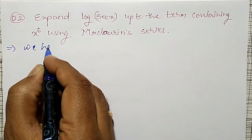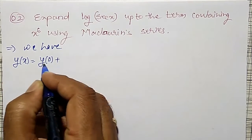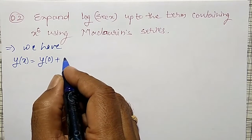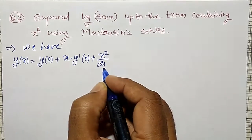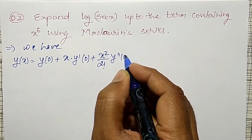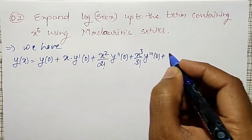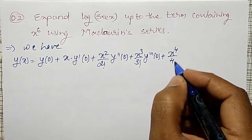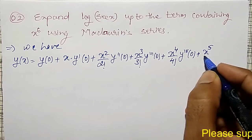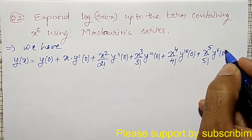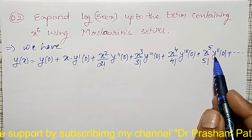We have y(x) equal to y(0), the value at x equal to 0, plus x into y dash at 0, plus x squared by 2 factorial into y double dash at 0, plus x cubed by 3 factorial into y triple dash at 0, plus x to the power 4 by 4 factorial into the fourth derivative at 0, plus x to the power 5 by 5 factorial into the fifth derivative at 0, plus so on. We want up to x to the power 6.